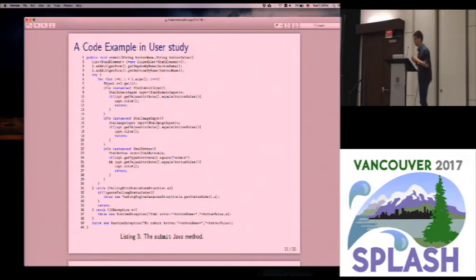To provide a concrete expression about the results generated by our auto-abridger, and what kind of source code the user will see in our user study, here's an example. Basically, it's a Java method that tries to submit an HTML form. Basically, it just checks the HTML object type, and according to that type, it checks different fields and does different operations.